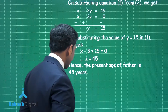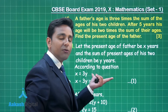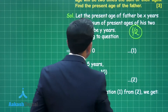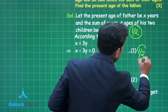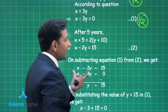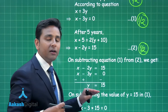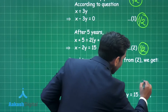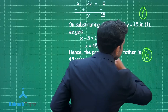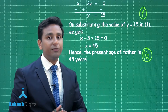Now the marking scheme for question 15: assuming the ages of the father and the sum of ages of the 2 children gives half a mark. Representing the second information mathematically gives another half mark. Solving the 2 equations using elimination method gives 1 mark, and the final answer — the father's age is 45 years — gives the remaining half mark.